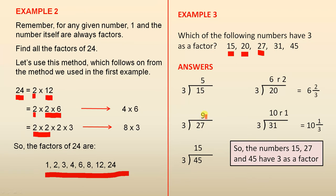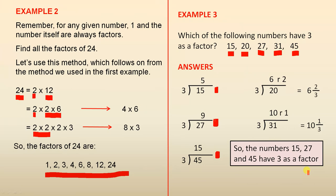3 into 27 goes 9 evenly, because 3 times 9 is 27. The fourth one: 3 into 31 goes 10 with a remainder of 1, which can be written as 10 and 1 third. And the last one: 3 into 45 goes 15, because 3 times 15 is 45. Looking at those with no remainders, the numbers 15, 27, and 45 have 3 as a factor.